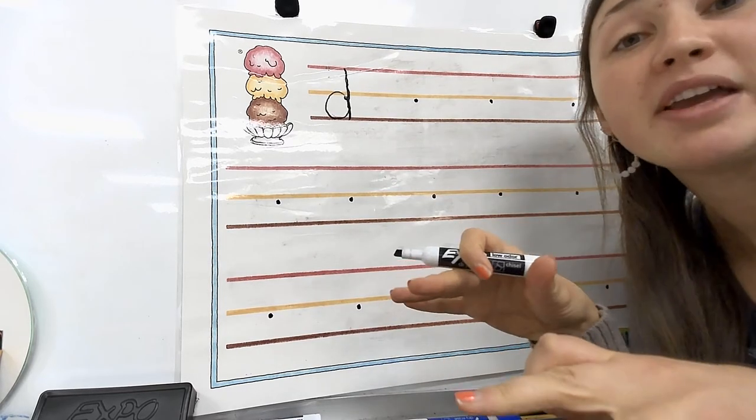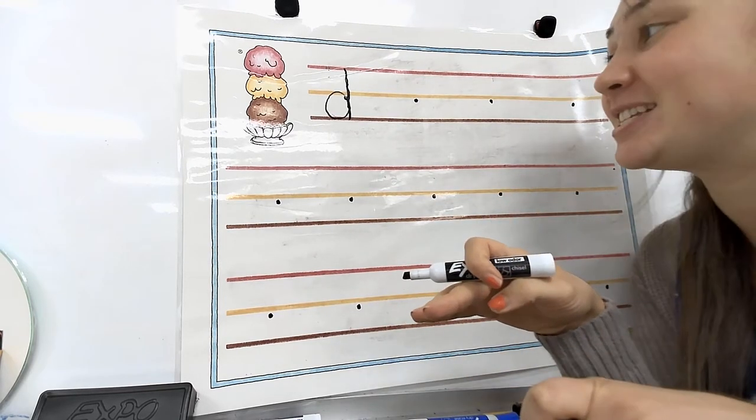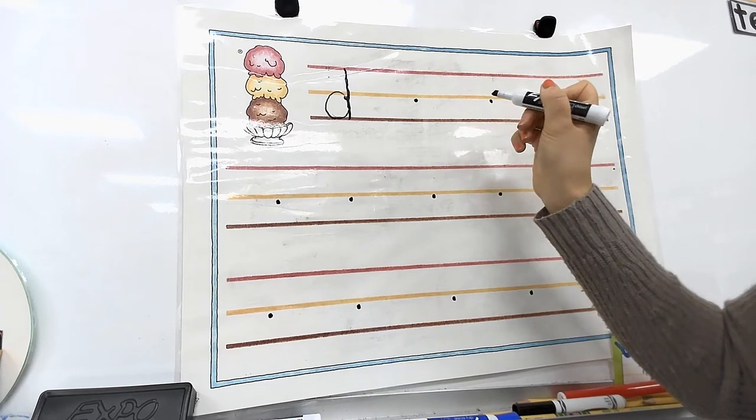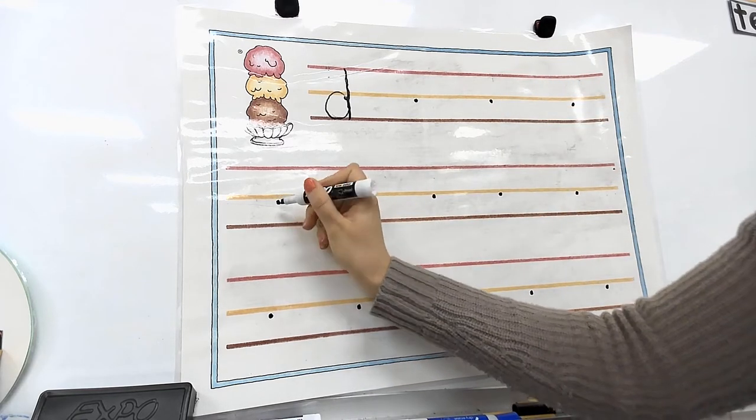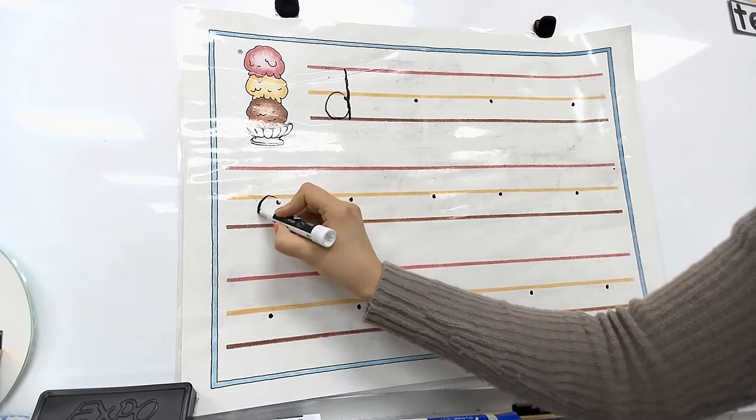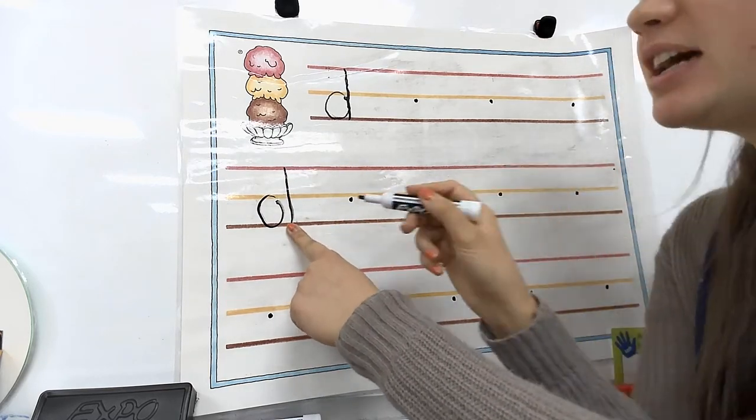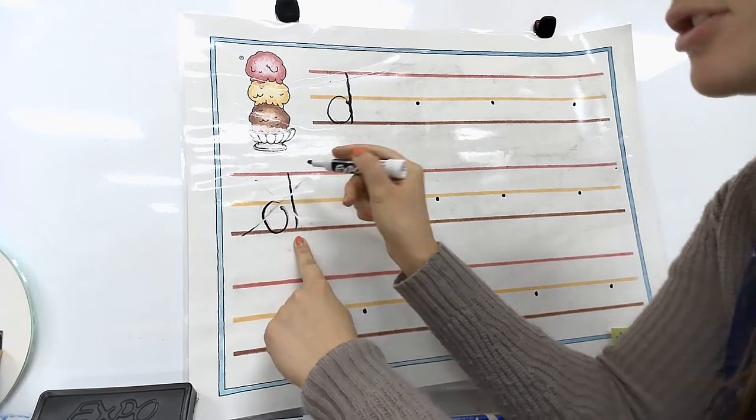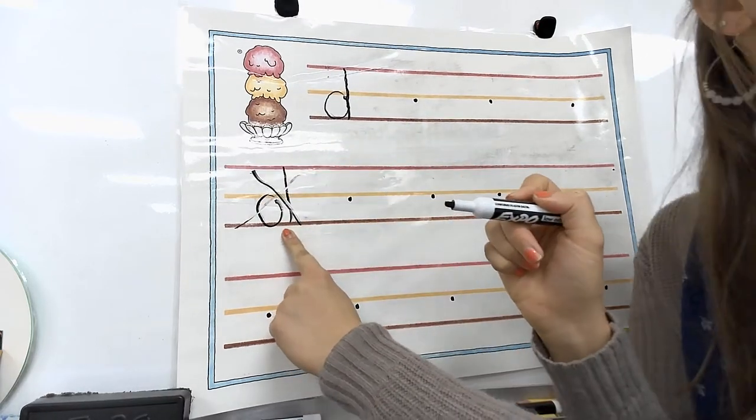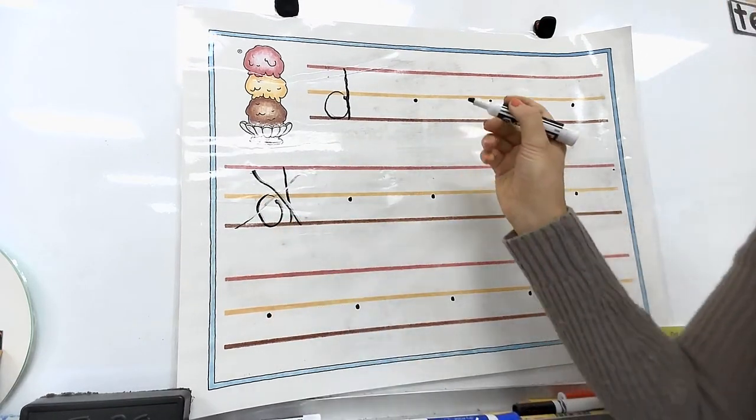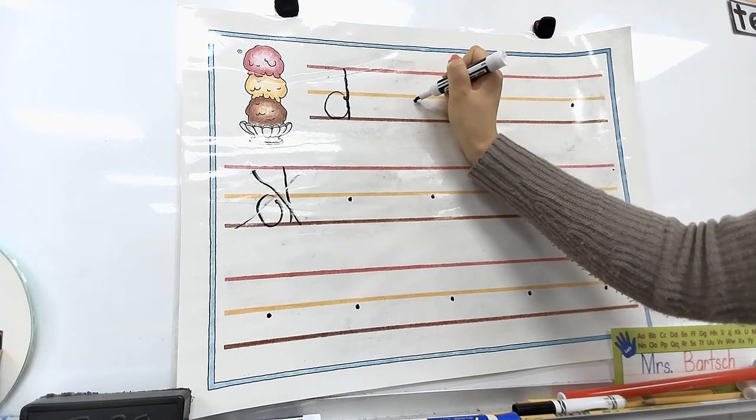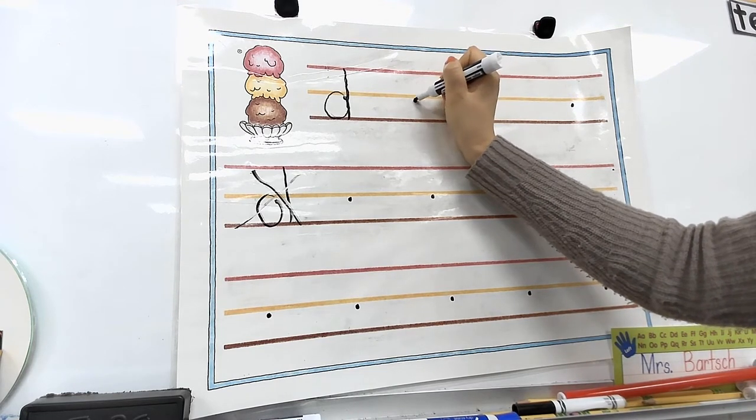You never have to pick up your pencil when you make a lowercase d. So I should not see, I should, I'll make a bad one over here. I should not see a circle and then a line disconnected. I shouldn't see that because you never actually have to pick up your pencil to make this. So you shouldn't have a space in there.